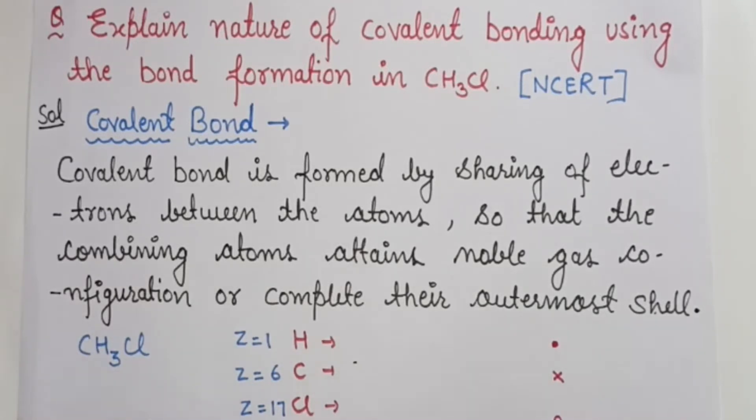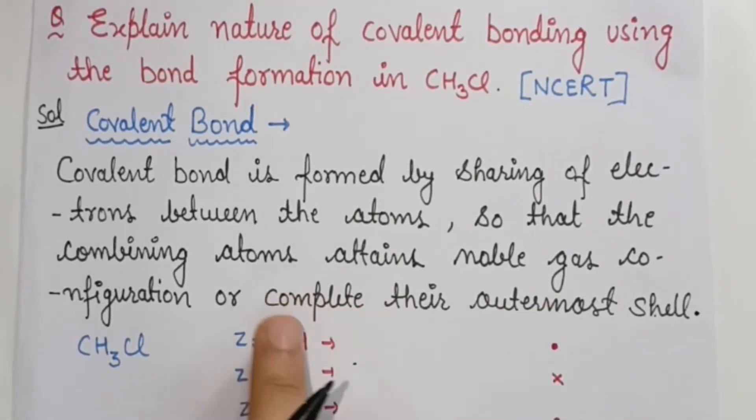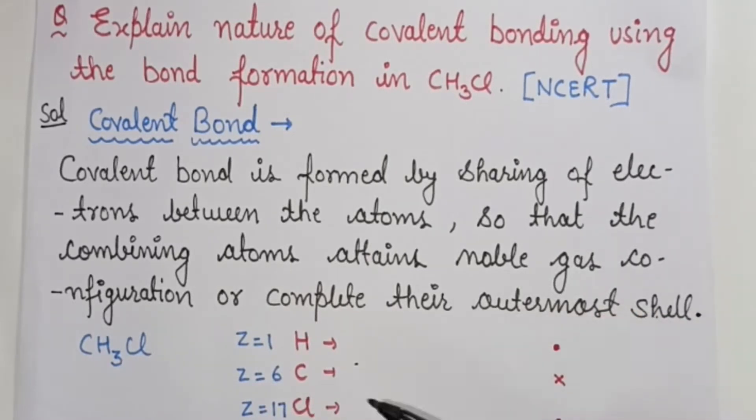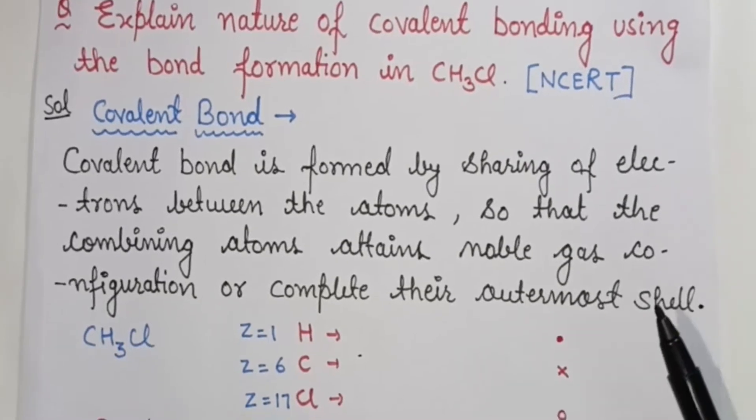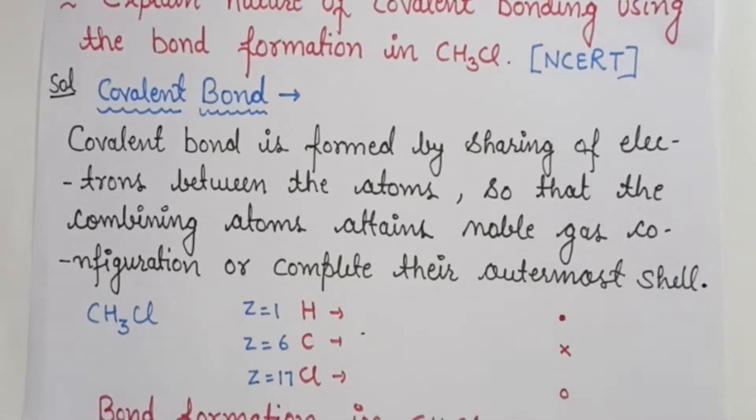Because by sharing, atoms attain the next noble gas configuration. In other words, each atom completes its outermost shell. If an atom is able to complete its outermost shell, then it will be stable. So atoms form covalent bonds.